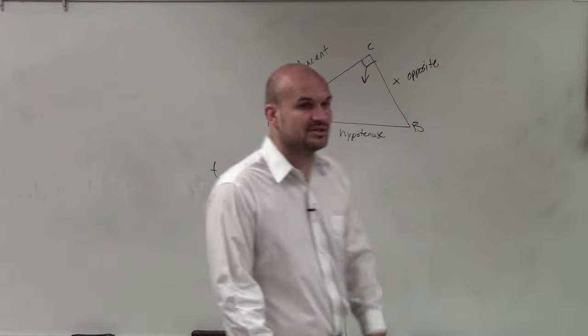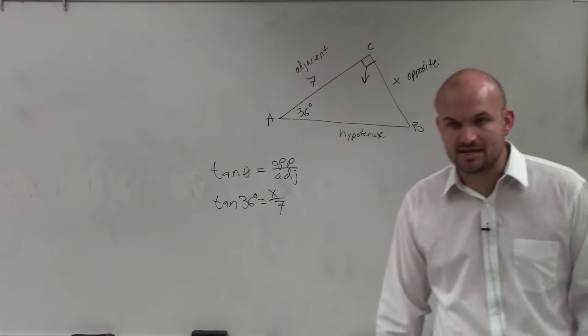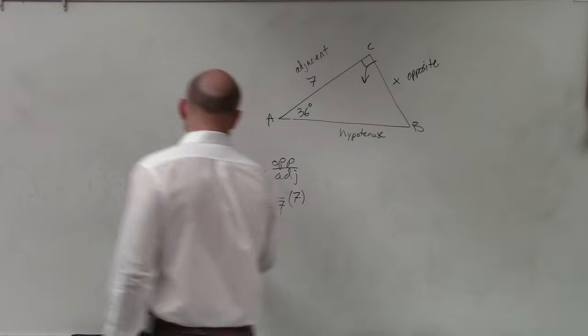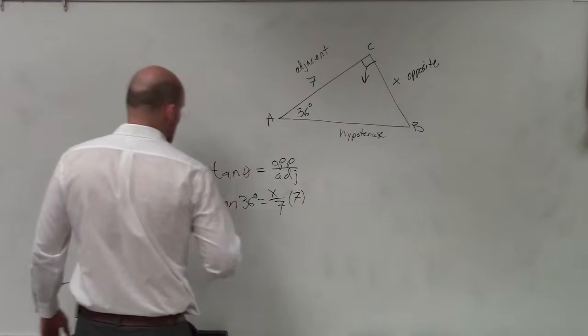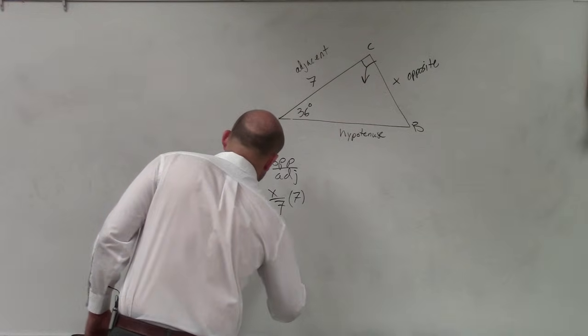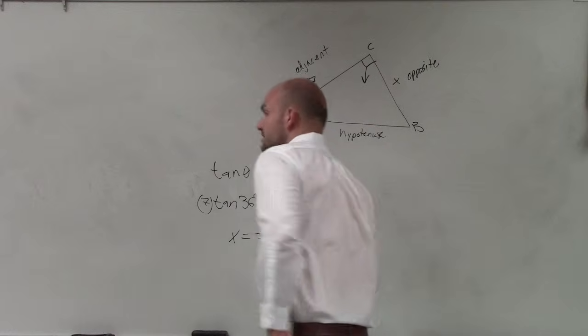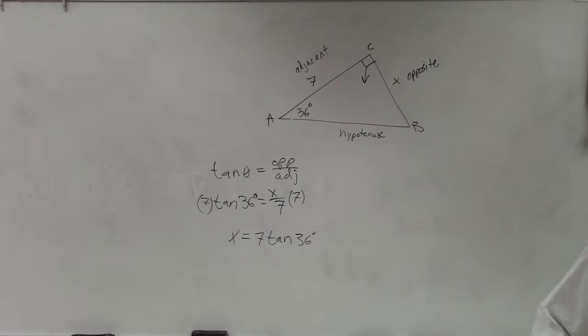Now you simply just need to solve for x. So I need to get the 7 off the denominator. So therefore, to do that, I'll multiply by 7 on both sides. Therefore, I have x equals 7 times the tangent of 36 degrees.